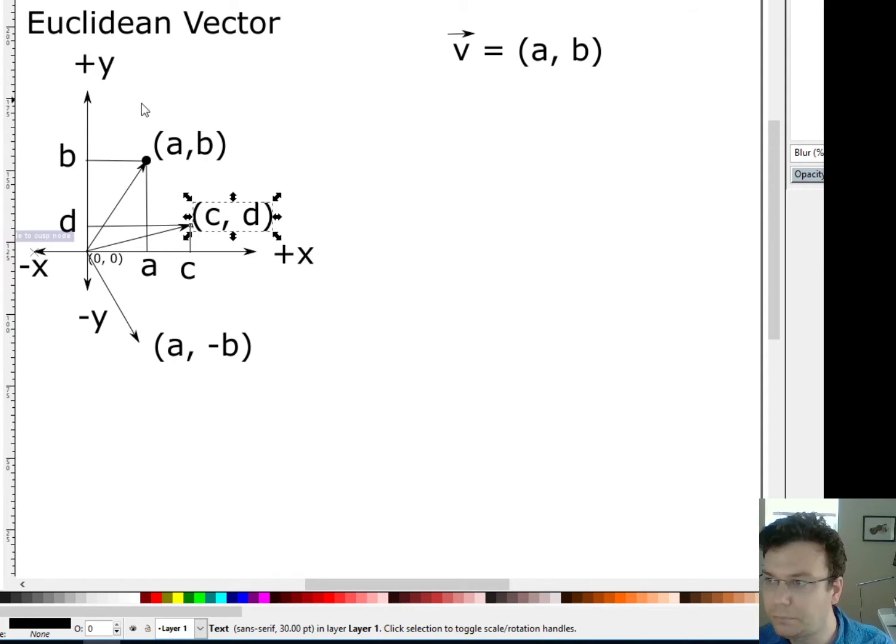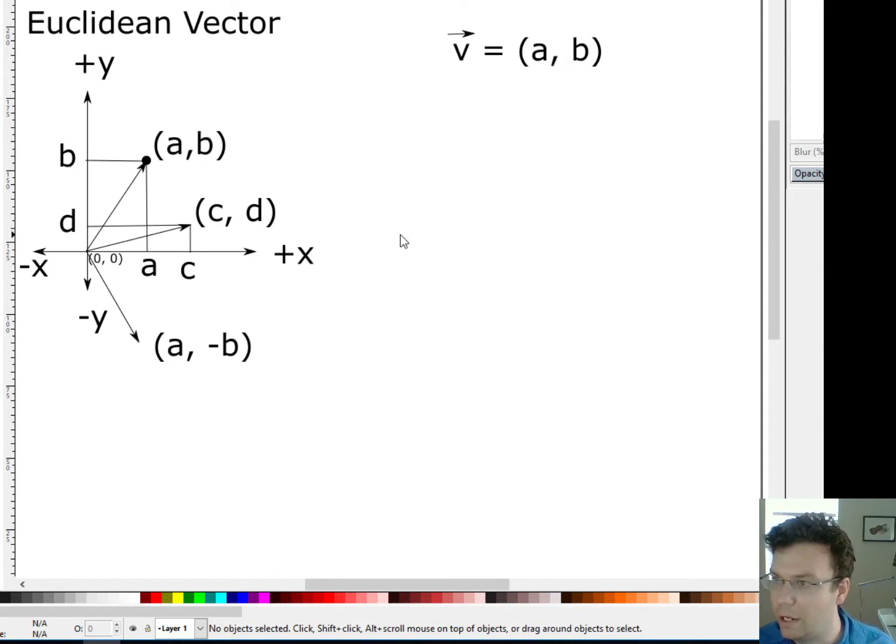So the question is, how do I add these two vectors together? I know how to add numbers. I mean, one plus one is two, last time I checked. But how do I add vectors? Well, it's pretty straightforward. Actually, all you have to do is add them component-wise. So you add the x to the x, and then the y to the y.